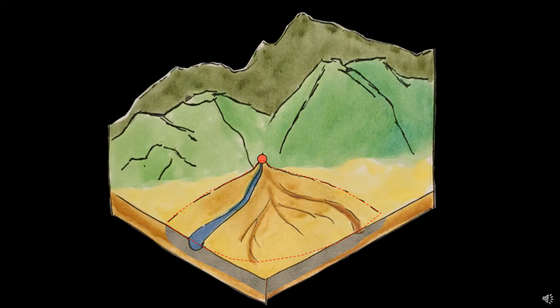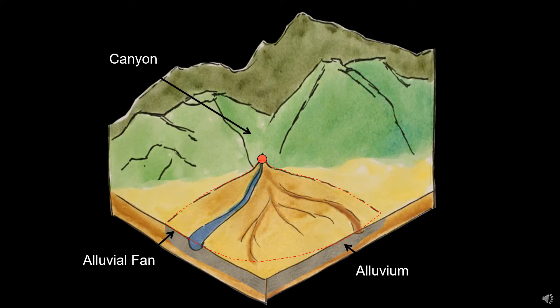Here we see a typical drainage area coming out of a canyon. An alluvial fan is outlined by the red dashed line. The fan-shaped deposit contains sediment, also known as alluvium, which can be seen in gray as part of the below ground view. The narrow portion of the fan is known as the apex. The apex is found near the canyon mouth and is the highest point of the alluvial fan.